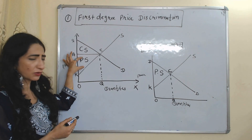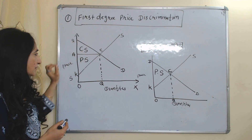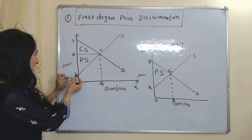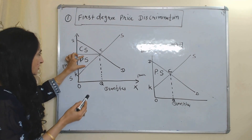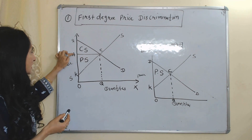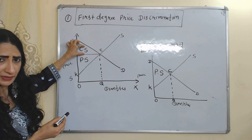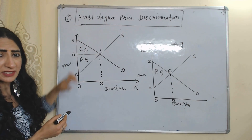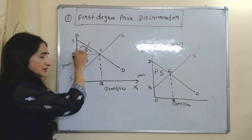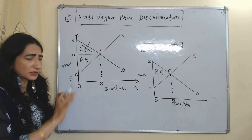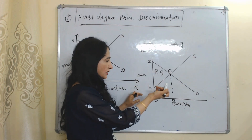Usually, some surplus goes to the producer and some goes to the consumer. In this diagram, you can see the part K, A, C goes to producer surplus, and the part A, D, C goes to consumer surplus. But in case of first degree price discrimination, consumer surplus is zero — no consumer surplus at all. All surplus goes to the producer.